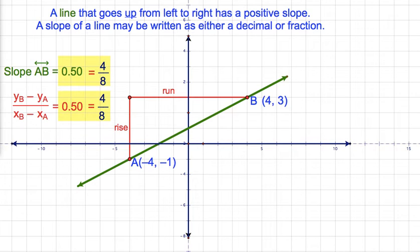A line that goes up from left to right has a positive slope. The slope of a line may be written as either a decimal or a fraction.